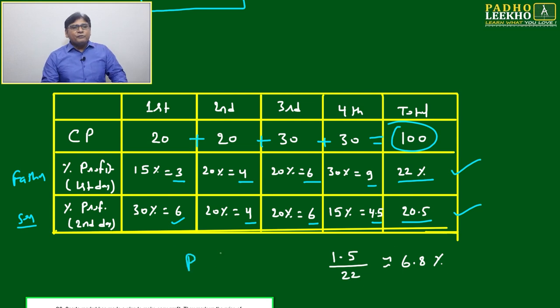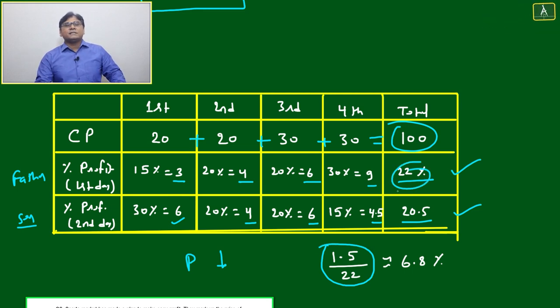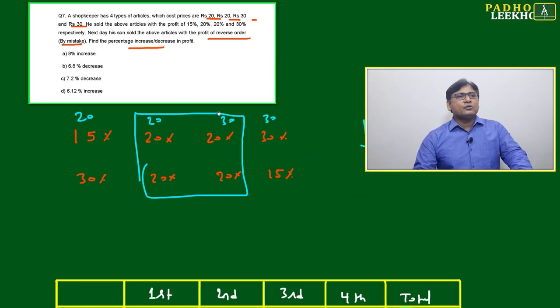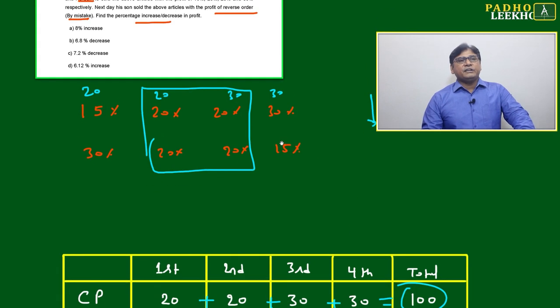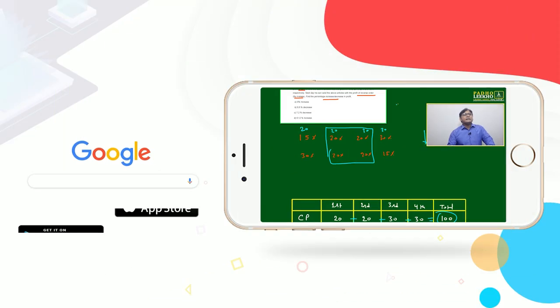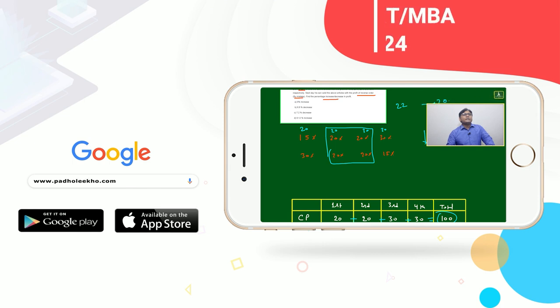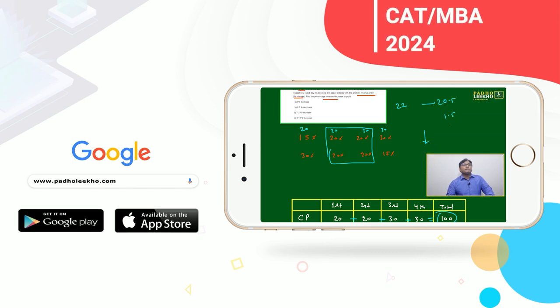Profit has come down by 1.5%. The question is asking: find the percentage increase or decrease in the profit. Day one it was 22%, day two 20.5%. So 1.5 out of 22 is approximately 6.8% decrease.